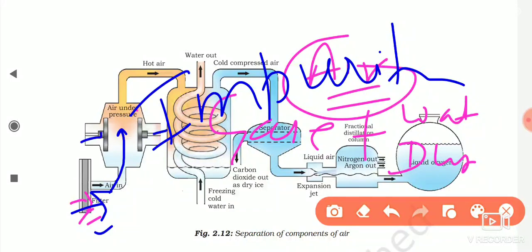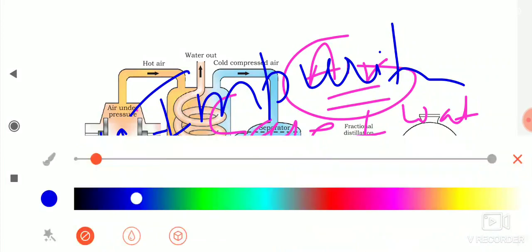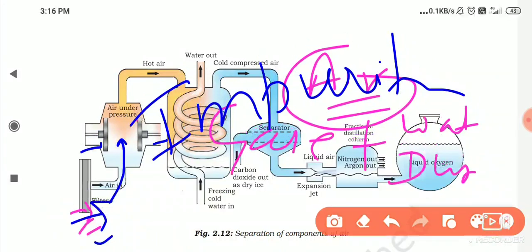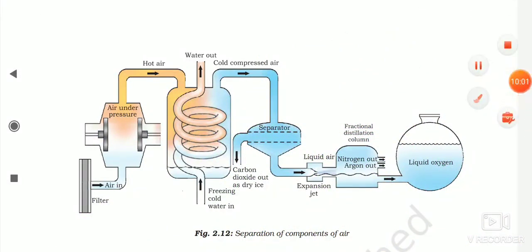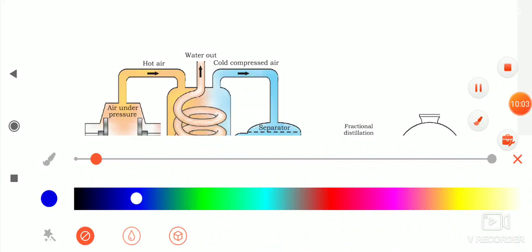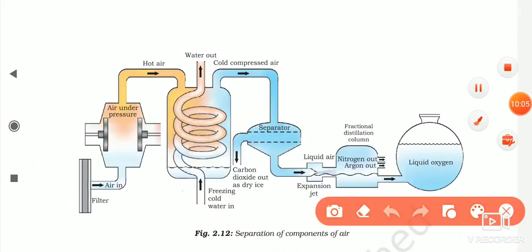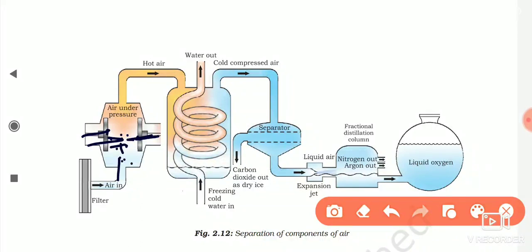After filtering, the air is compressed. A piston moves and the air passes through these pistons and is compressed. The compressed air is then passed forward.